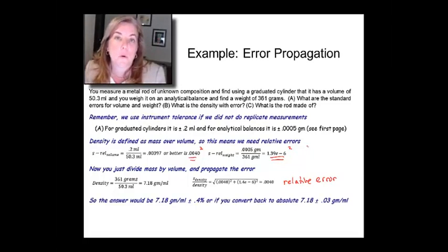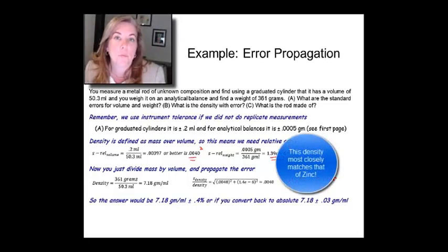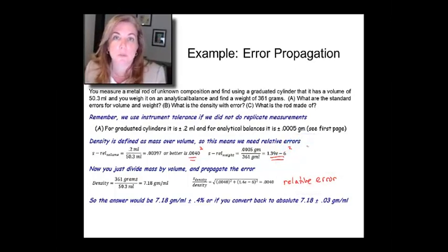So, the answer that I would report would be 7.18 grams per mil, that's just the average, and I would do plus or minus 0.4%. If you convert back, take 0.4 times the 7.18, you can calculate the absolute error to be 0.03 grams per mil.